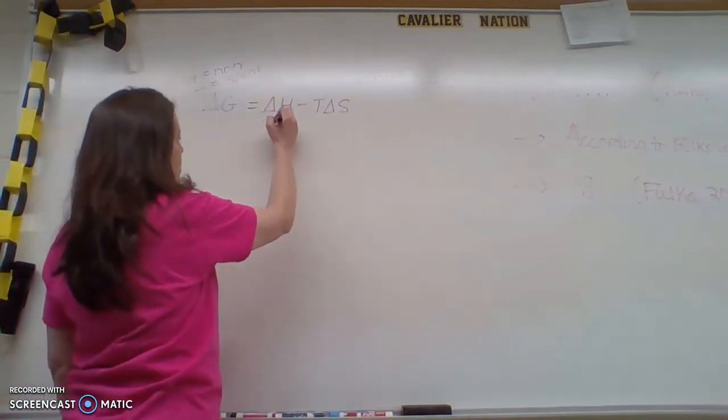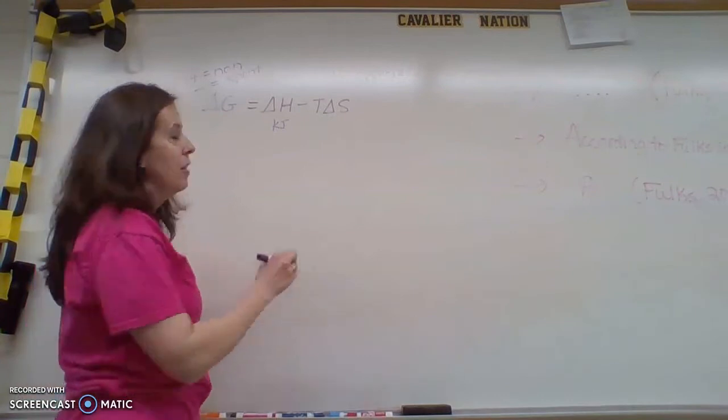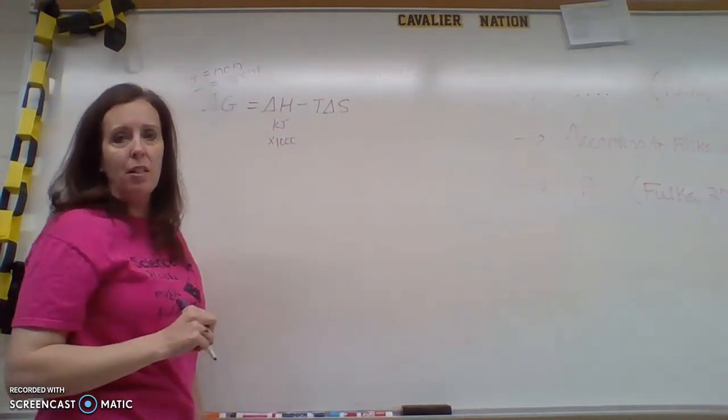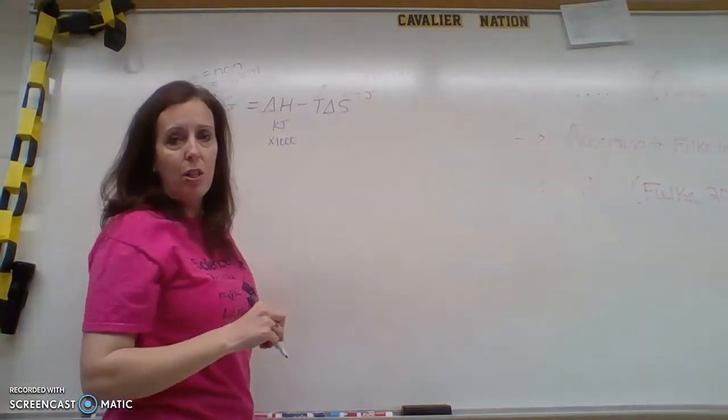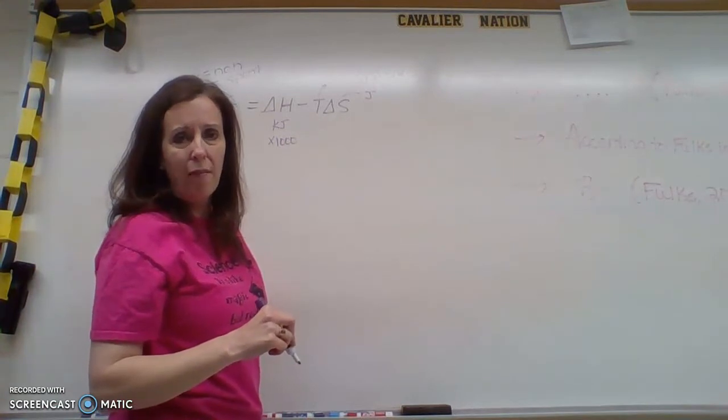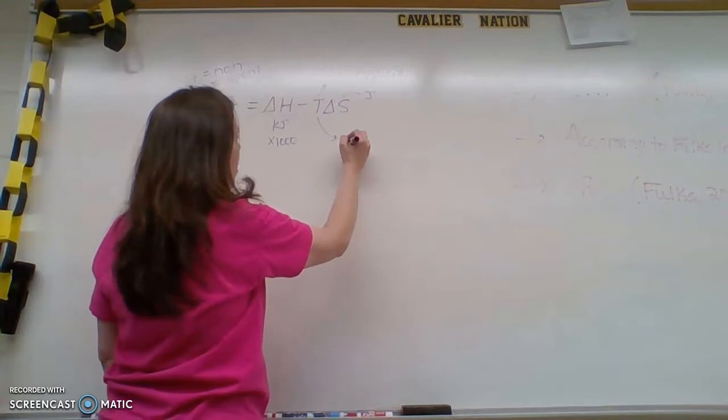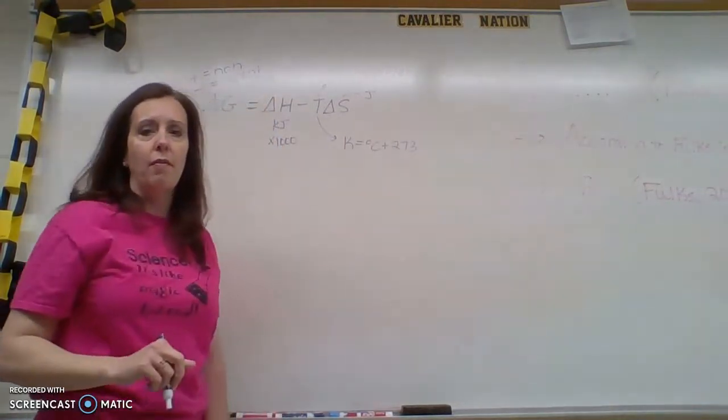Delta H is going to be given to you in kilojoules. Please make sure before you put it into this equation, you multiply it by 1,000 to get joules because entropy is going to be in joules. T stands for temperature. What do you think temperature is going to have to be in? What does temperature always have to be in? Kelvin, and if I give you degrees Celsius, you're going to add 273.